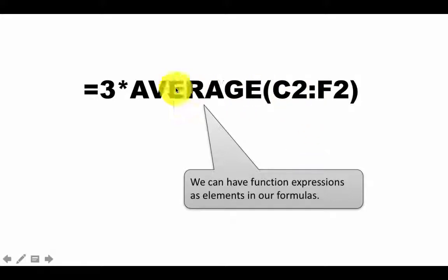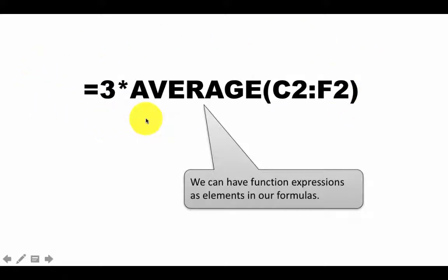The important point this illustrates is that when you are using a function, it doesn't mean that the function has to be the only thing in the formula. A function can be a part of a larger expression in a formula. In fact, a function can be an argument inside of another function. Think of the result of AVERAGE(C2:F2) as just one number — wherever you can put a number, you can put that whole expression. This is how you build complex formulas in Excel.